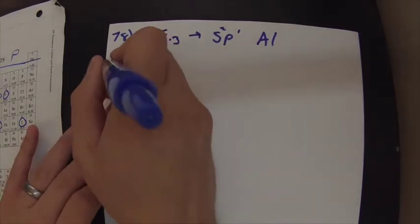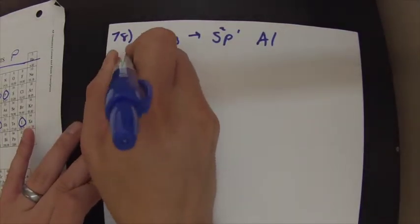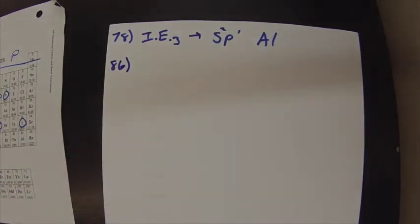Alright, next up is 86. So 86 asks, based on the ionization energies of the alkaline metals, which alkaline metal would you expect to undergo the most exothermic reaction with chlorine gas?